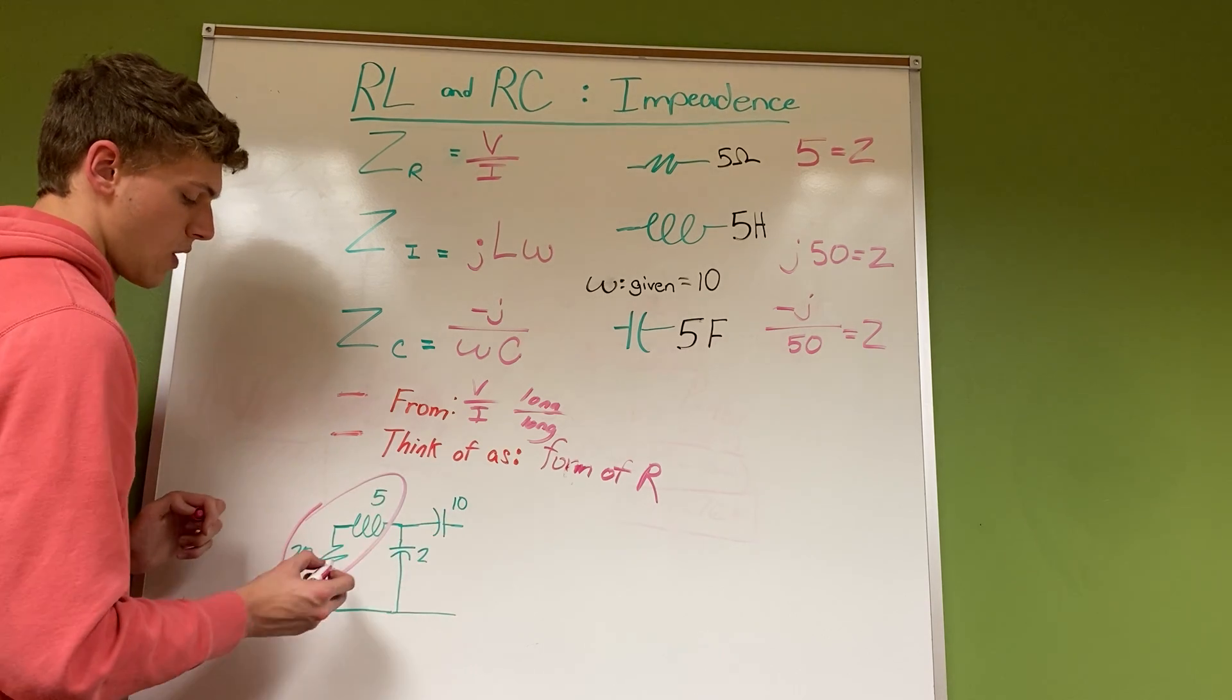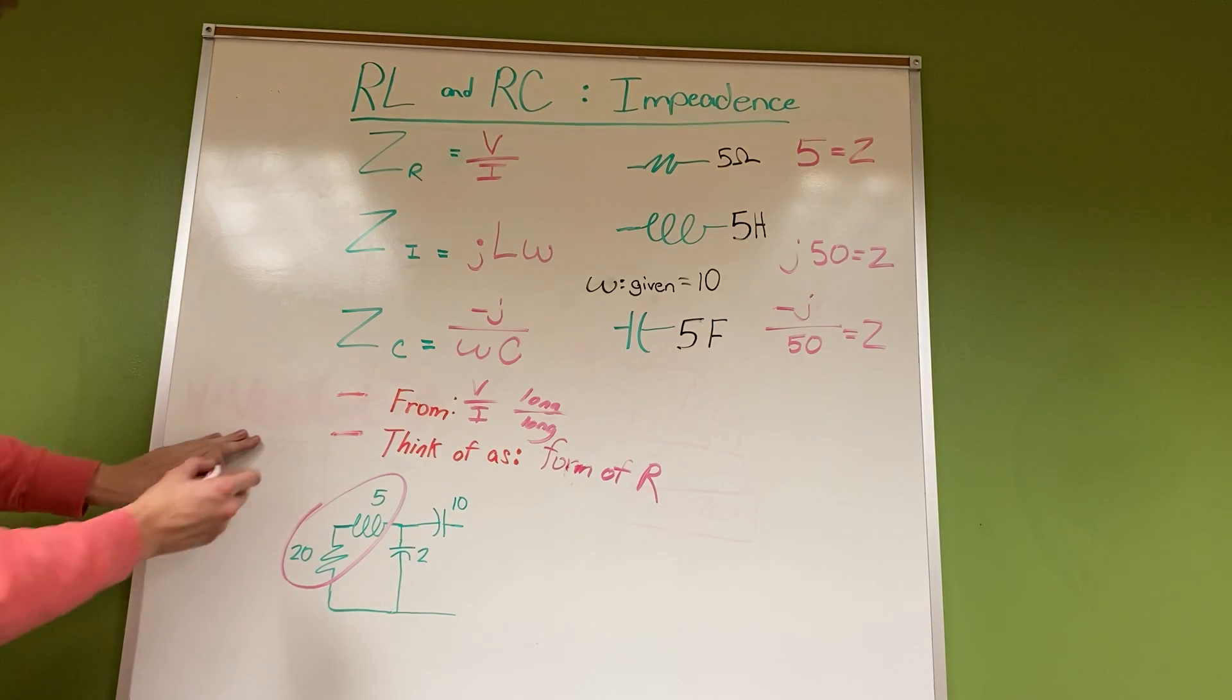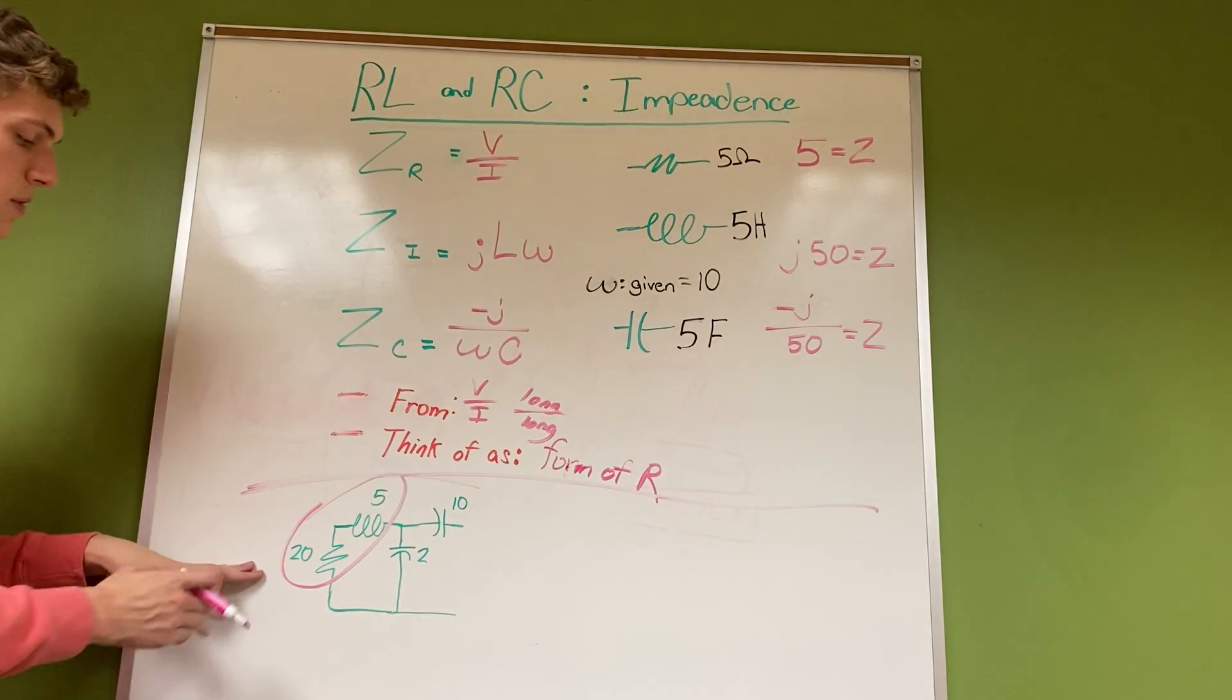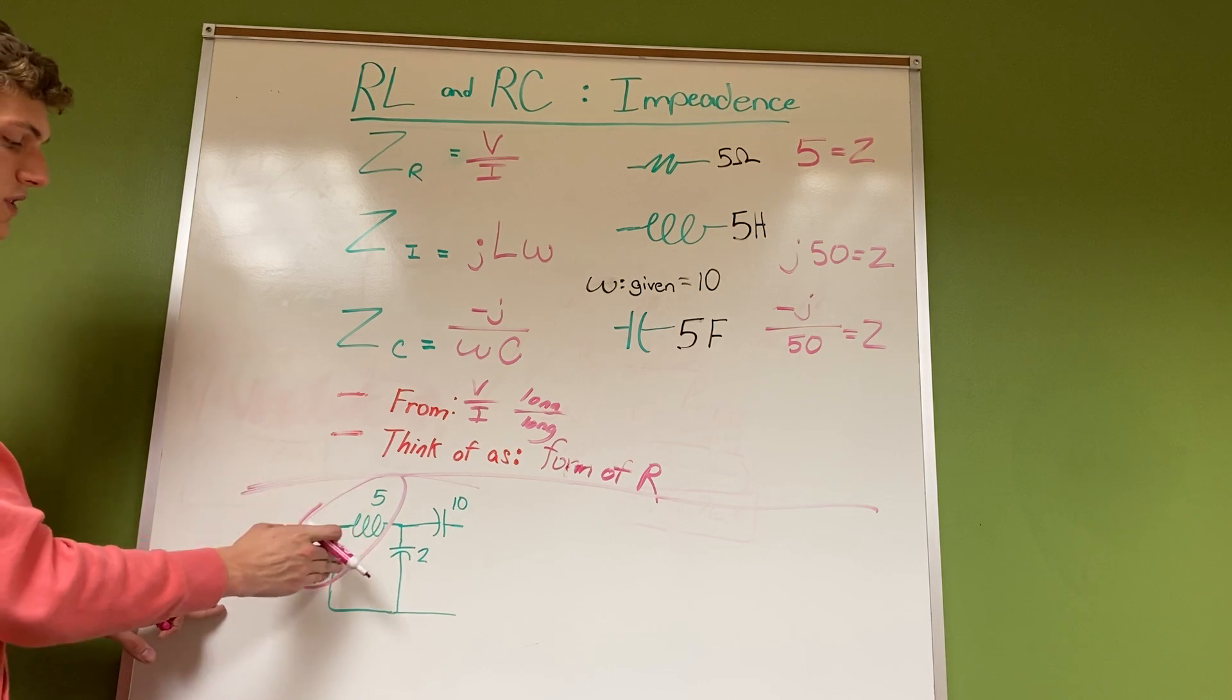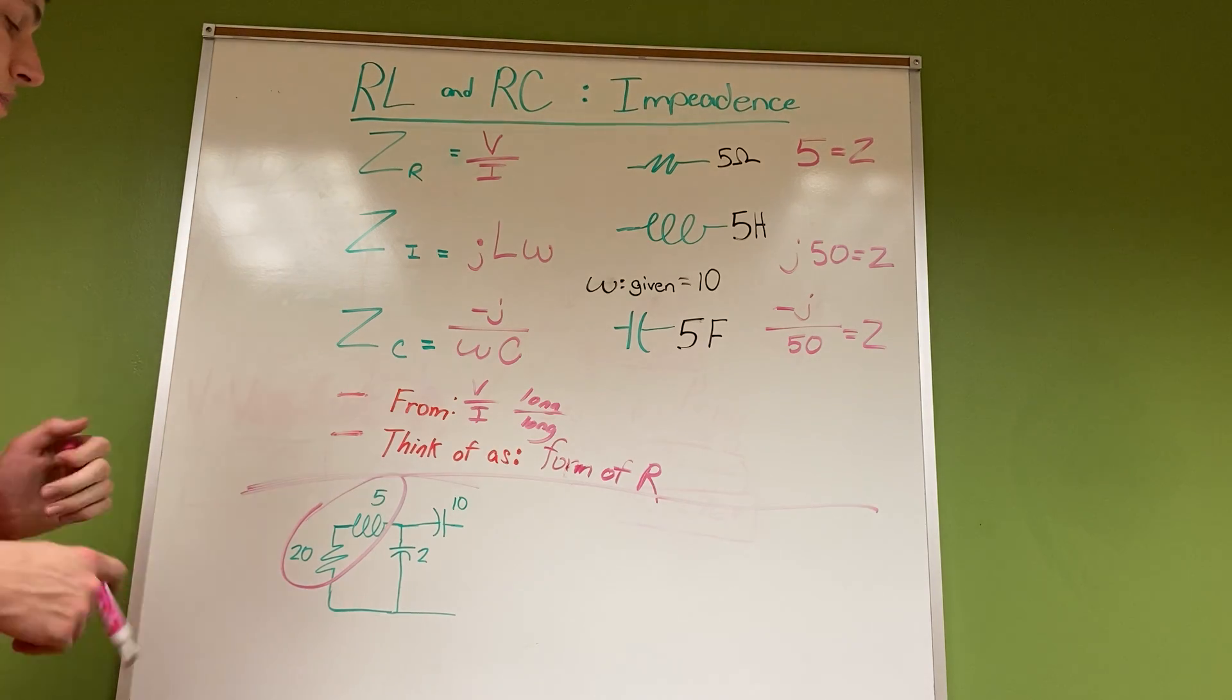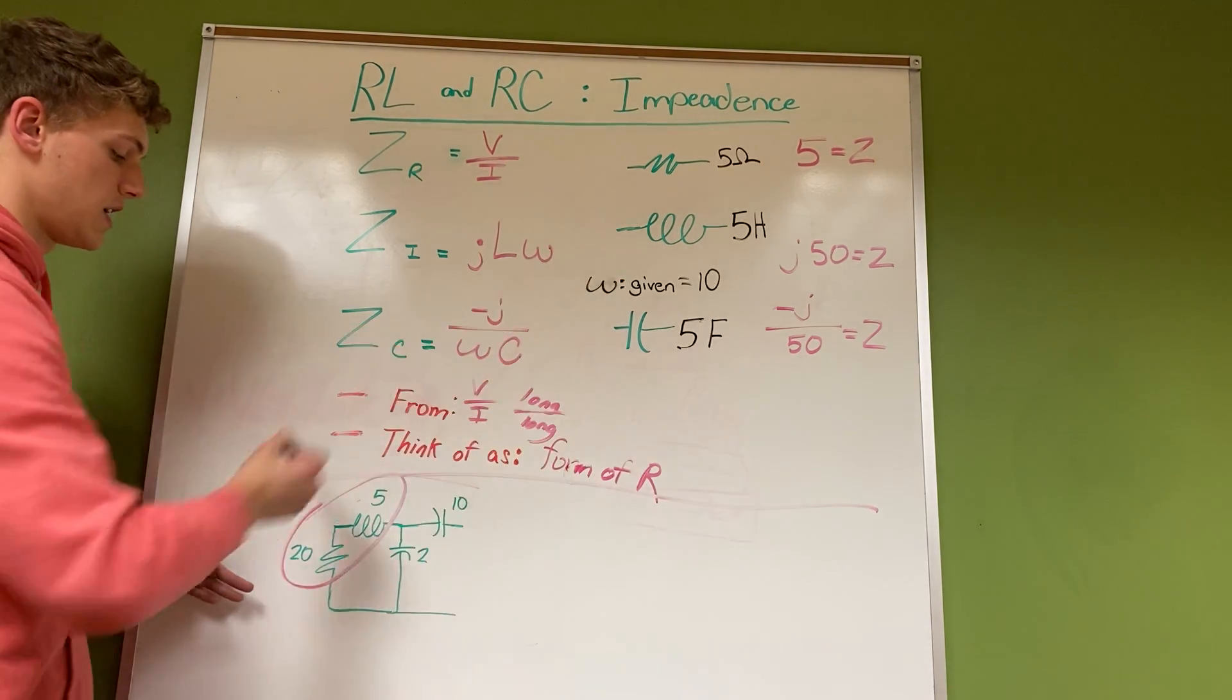If we have this circuit, for example, we have our 20 ohm resistor and our 5 henry inductor. First, we would have to change this inductor to impedance.